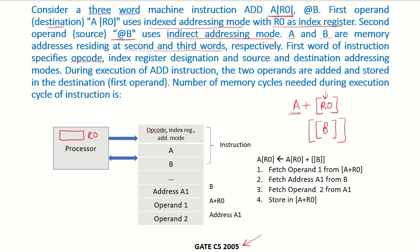Since this is a 3-word instruction, the first word, second word, and third word comprise the instruction. The second word contains memory address A, and the third word contains memory address B. The first word of the instruction specifies the opcode, index register, and the addressing modes of the source and destination operands.